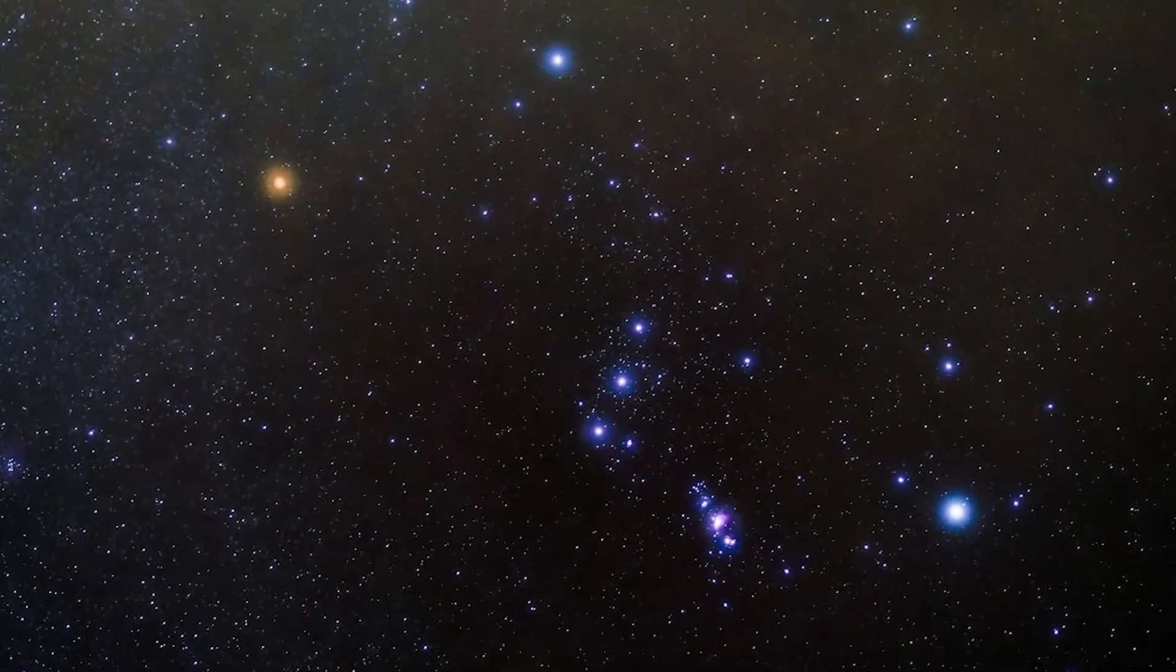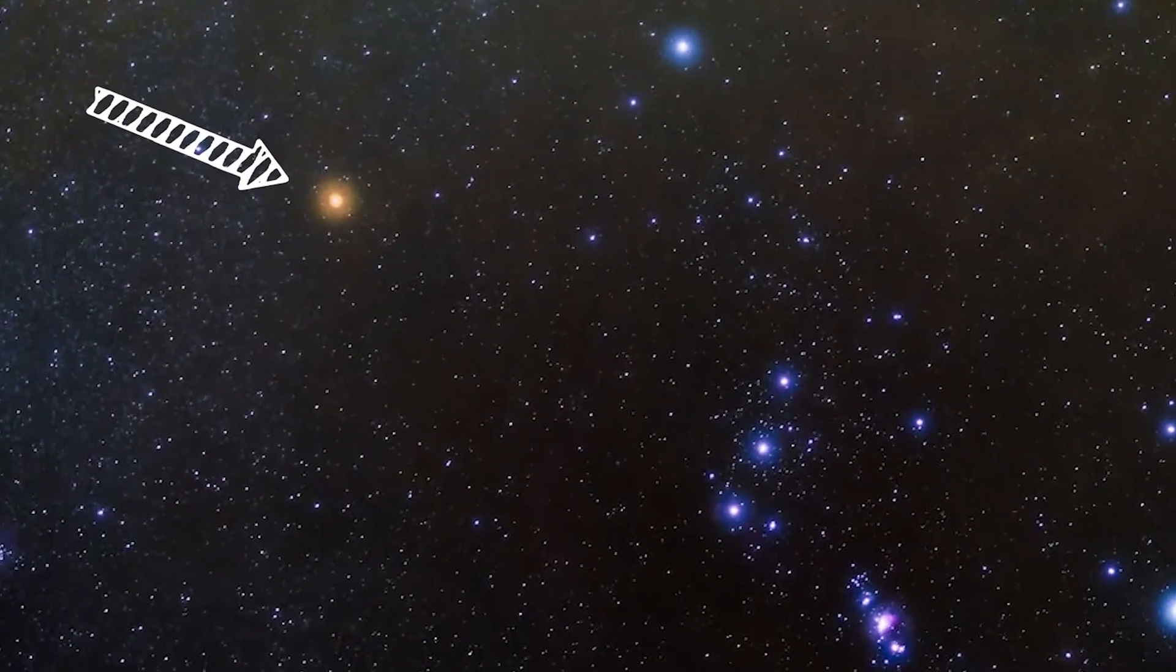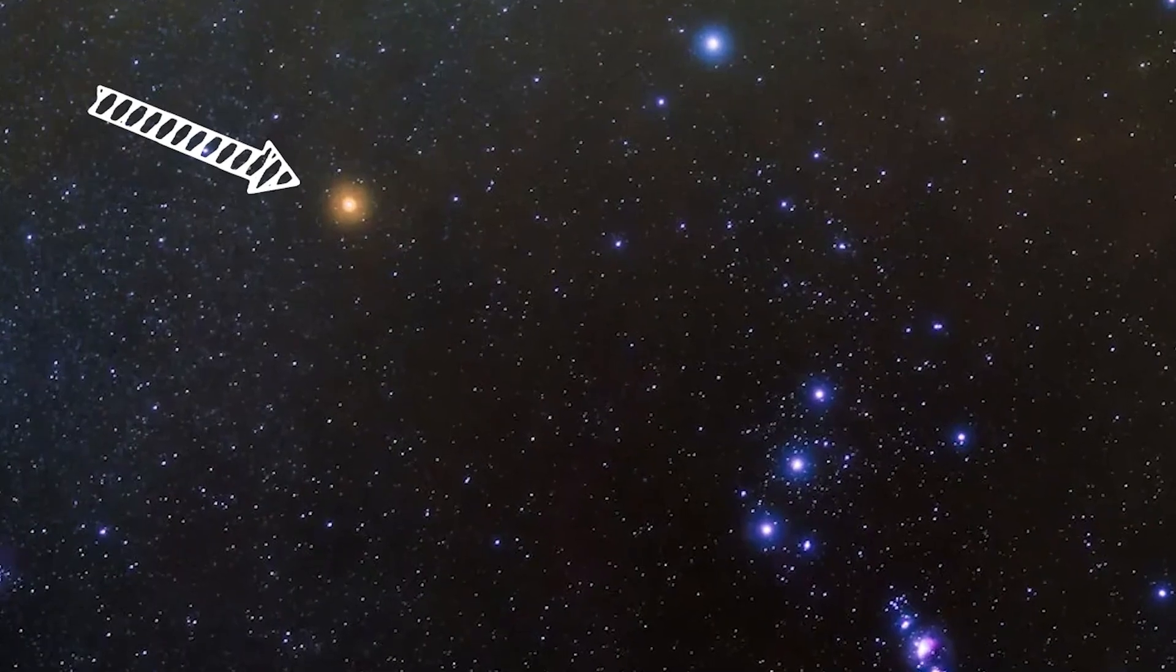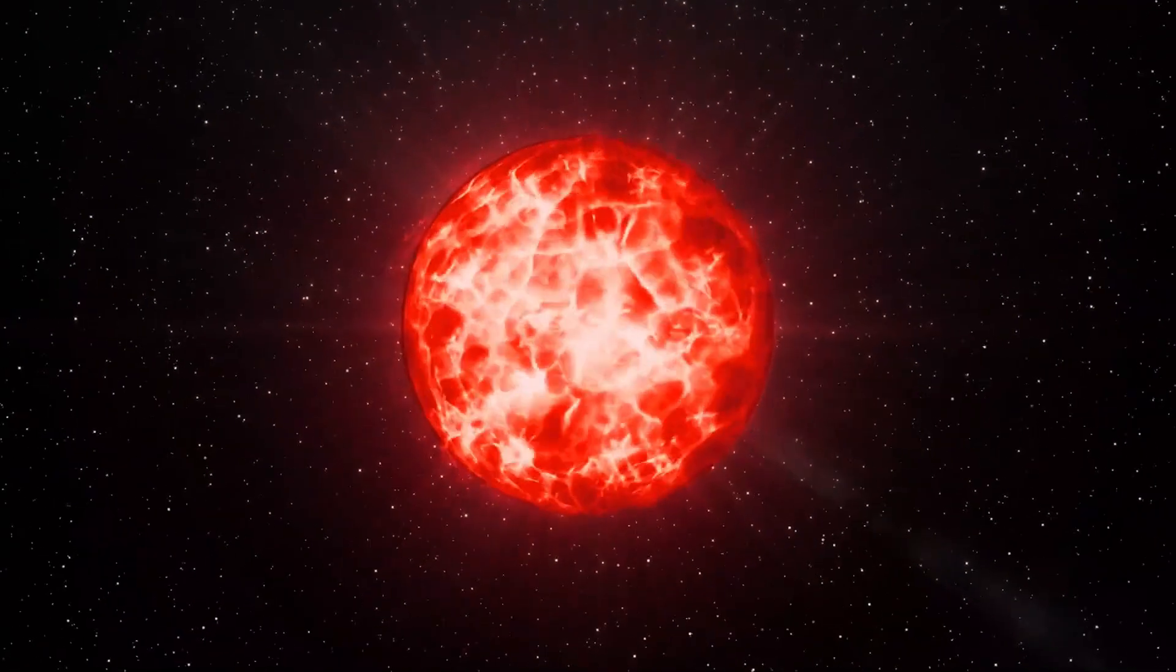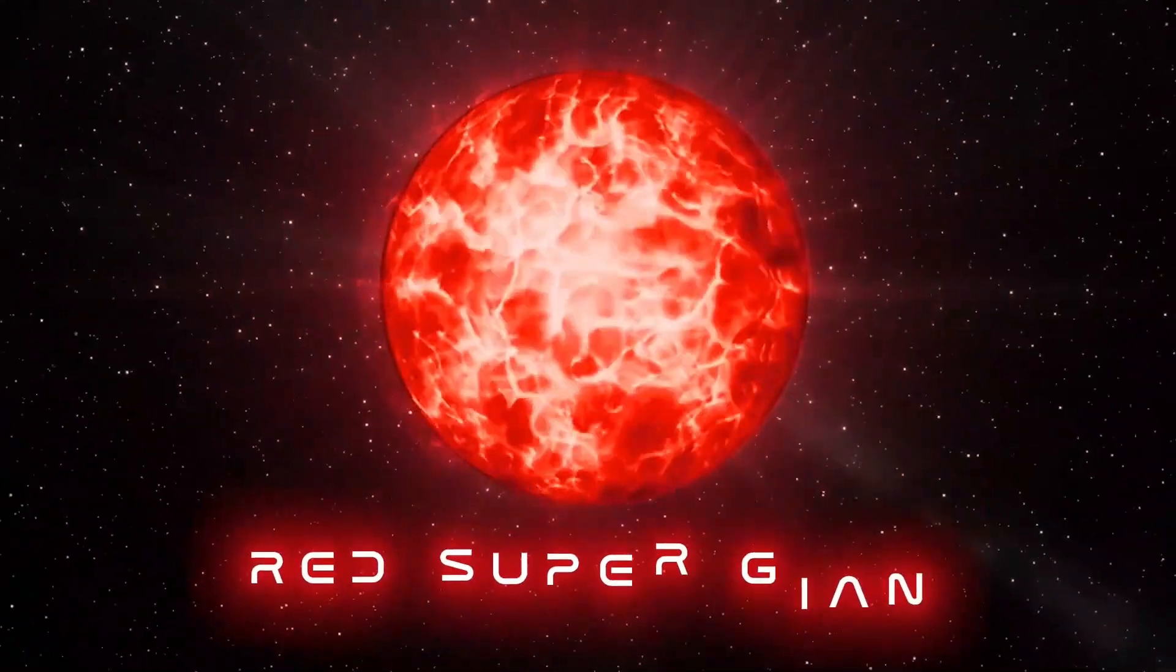This star is 500 light years away from us, but even with that, it's still bright in the night sky. And the main reason is that this is not an ordinary star. This is a red supergiant, which is a lot hotter, brighter, and bigger than a normal star.